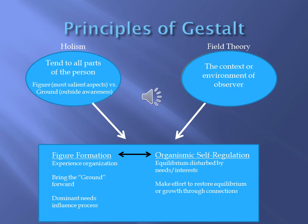Then there are some items which we are much less aware of — these are the items in our ground. These could be passive experiences that have helped shaped who we are, yet we haven't looked closely at them. Holism cannot be looked at alone; there is also the Field Theory, which is the context, situation, or environment an individual is in. Both Holism and Field Theory impact the figure formation process and the organismic self-regulation, which constantly interact and cannot truly be separated. The organismic self-regulation works to restore equilibrium in a person if they are feeling off balance.